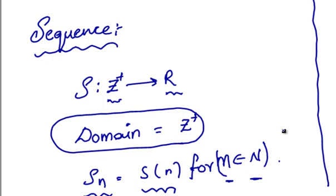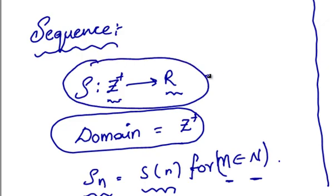How do we denote a Sequence? The Sequence S mapping from Z plus to R is denoted in this fashion.